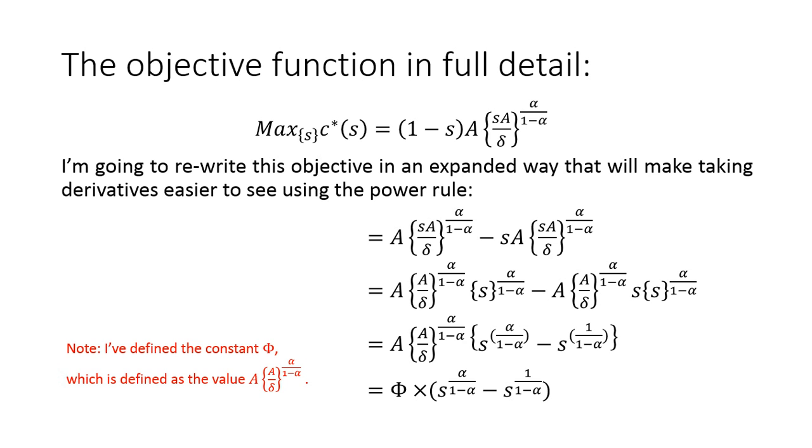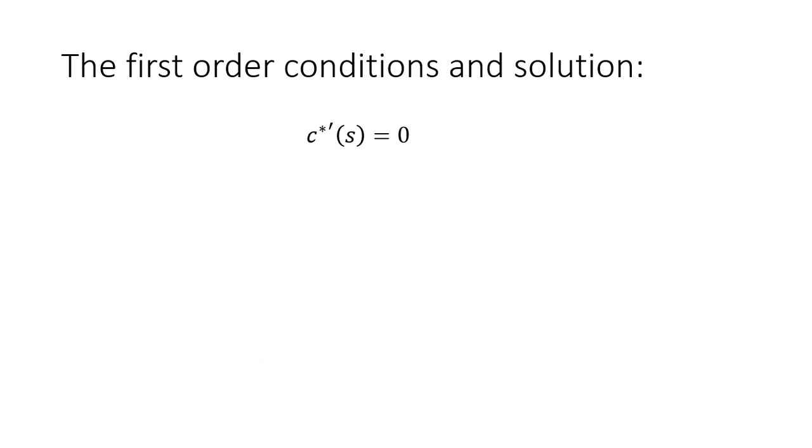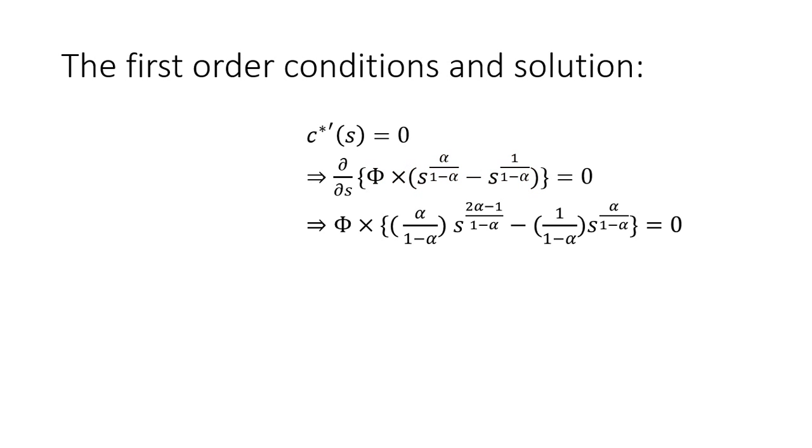Okay, so what do we want to do? Well, we want to take the derivative of our objective function now with respect to s, which looks a little bit easier to do, a little bit less daunting, because we can just use the power rule here. So we're going to take the first order condition, which means we're going to take this partial derivative of c with respect to s. And you'll notice c was a function of other parameters, but I've dropped them since we're just interested in the effects of the savings rate for this exercise.